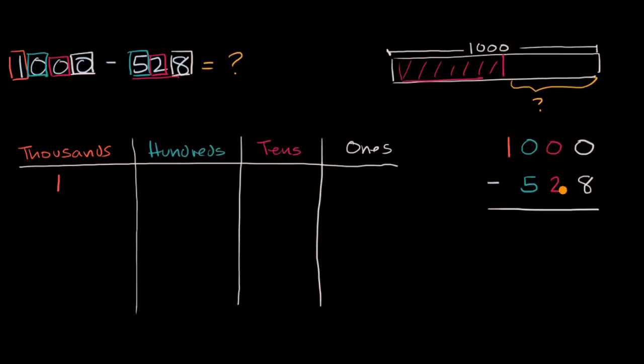Because right now we have no hundreds, we have no tens, and we have no ones. And with the standard method we have the same problem. Because we start in the ones place and we say hey we want to take 8 ones from 0 ones. Similar problem here. How do we take 8 ones here? Similarly we want to take 2 tens from 0 tens. How do we do that here? And the answer is regrouping. What we want to do is break up this 1,000 so that we can start to fill in these other categories. It's like exchanging money.